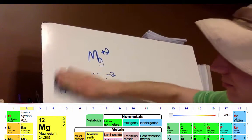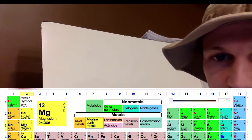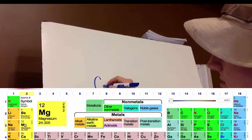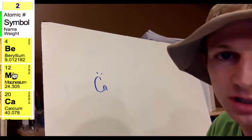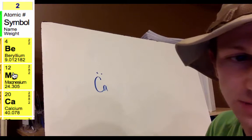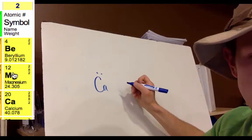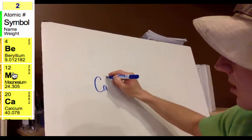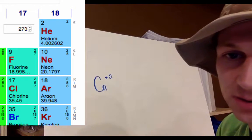As practice, pause the video and do the Lewis dot structure for the calcium ion. Here's calcium normally — go ahead and pause. Coming back: calcium would lose its two valence electrons, becoming a positive two charge — Ca²⁺.